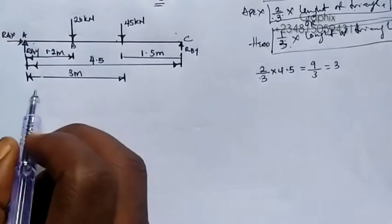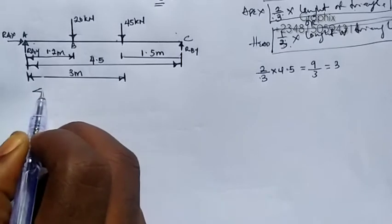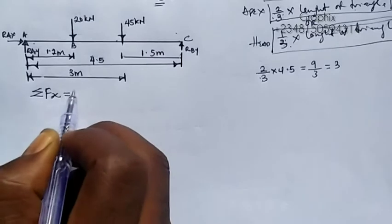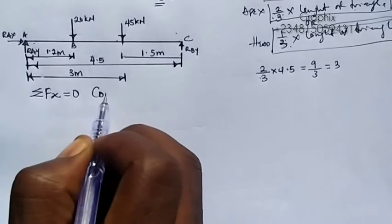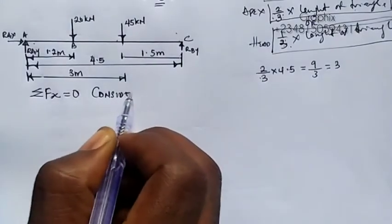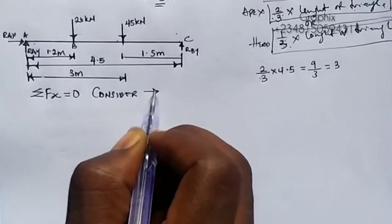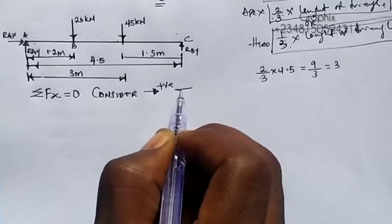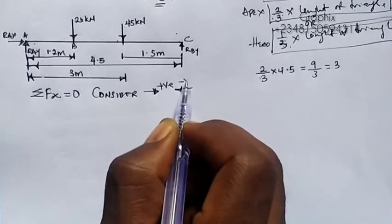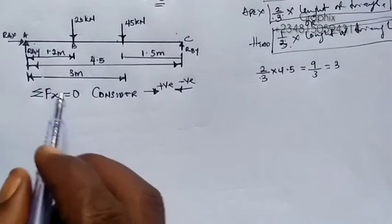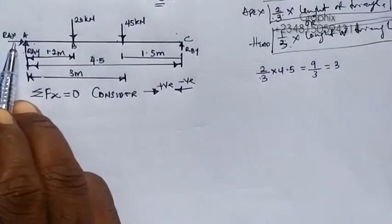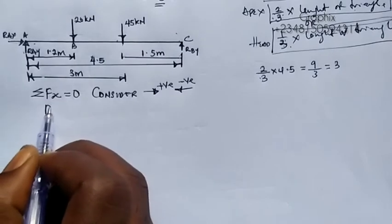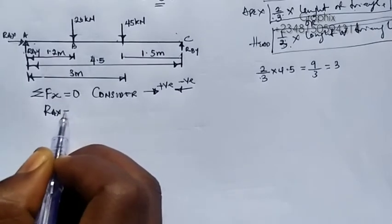Using the conditions of equilibrium: the first one says the summation of forces in the x-direction equals zero, considering forward force as positive and backward force as negative. We only have one horizontal component here, which is RAX. So RAX equals zero.